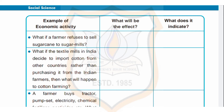Second example: what if the textile mills in India decide to import cotton from other countries rather than purchasing it from Indian farmers? Then Indian farmers will not be able to produce and sell cotton, thus becoming jobless and the primary sector will be affected. This indicates that India should control its imports.